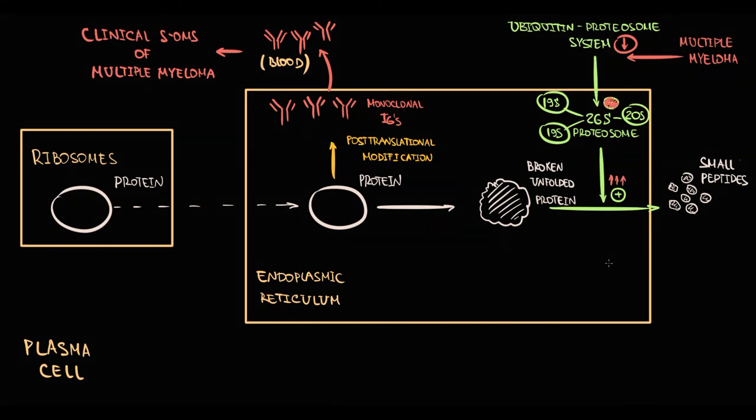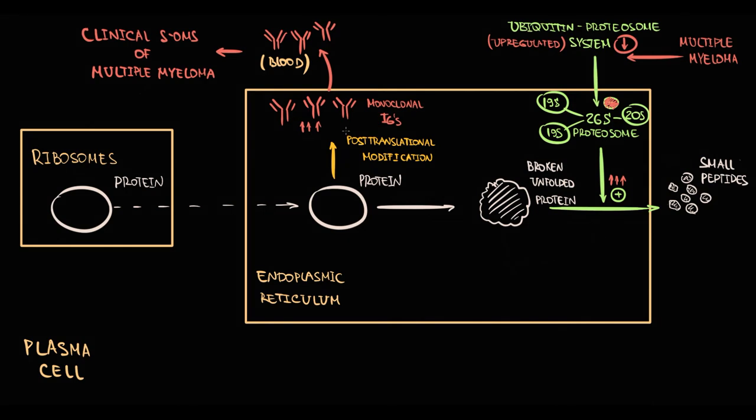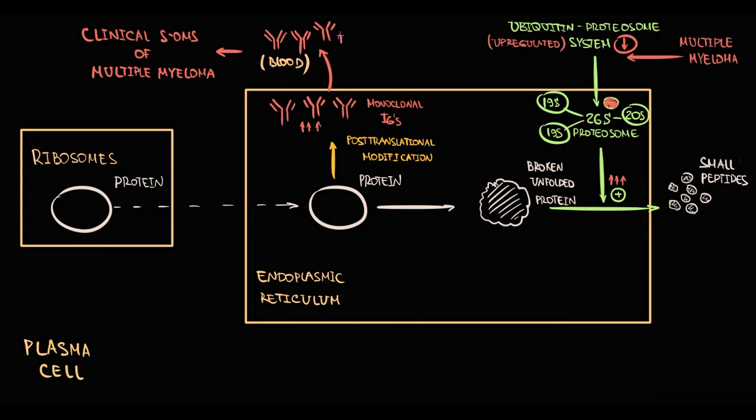And by this, it prevents protein overload in endoplasmic reticulum. Because malignant plasma cells have inhibited ubiquitin proteosome system, they are able to produce huge amount of proteins without excessive accumulation of unfolded proteins in endoplasmic reticulum. This specific feature of malignant plasma cells makes them really dangerous, because they can produce huge amount of immunoglobulins that cause severe clinical symptoms.